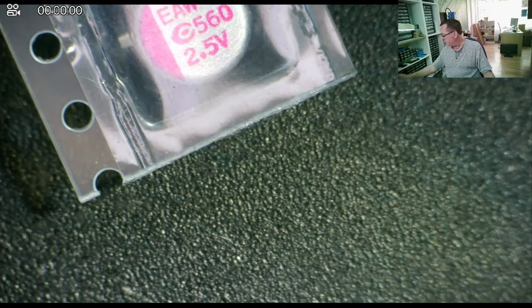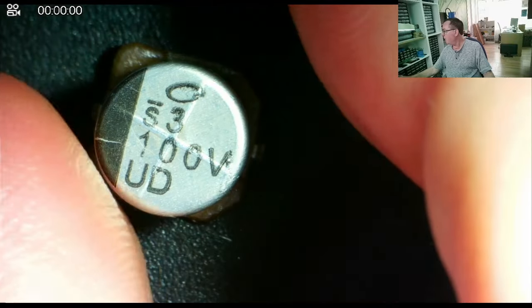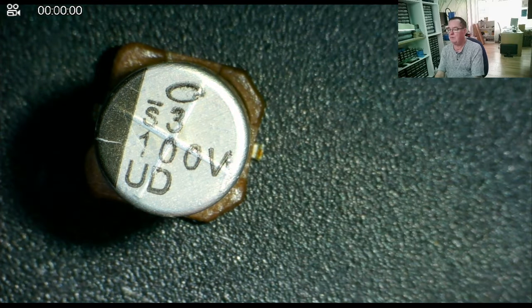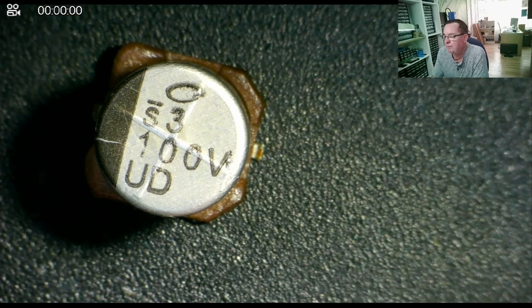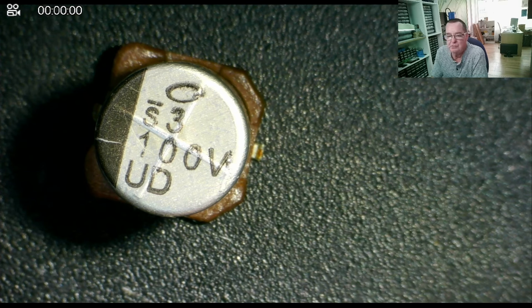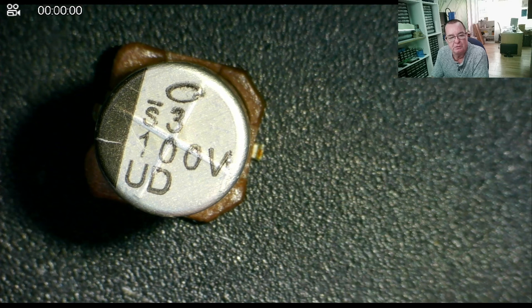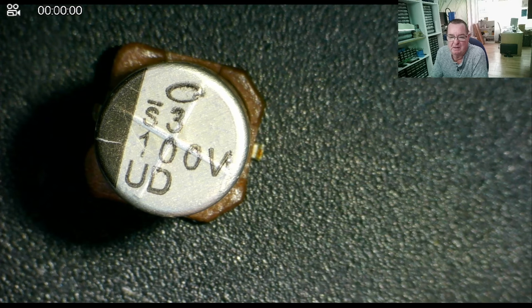But you will find some capacitors that are marked, for example, like this one. So S with an underscore 3, 100 V, 100 volts, UD. It looks like we have a 100 volt capacitor here, but with no capacitance marked on. Maybe the S3 will tell us and UD. So how do we decipher these types of codes?